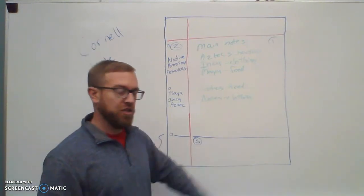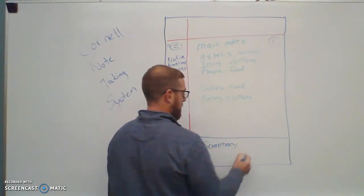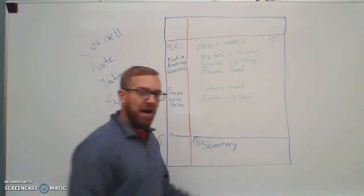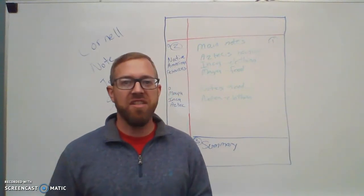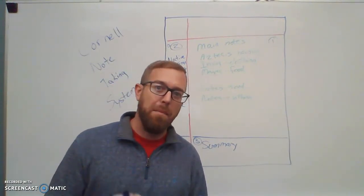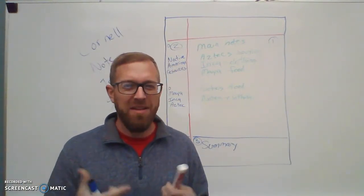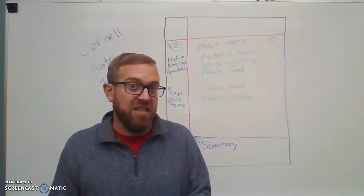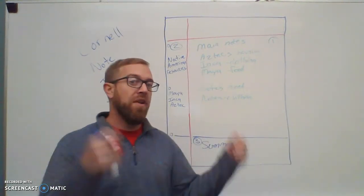Now at the very bottom, the third section, this is where you write a summary. You write a summary of what you're talking about. So at the very bottom in that third box, I might write down one sentence that says, "Mr. Garvey's lecture talked about the types of natural resources that the Maya, the Inca, and the Aztec use." Simple, right? You might want to add a little bit of detail in there, say that they use natural resources and not man-made resources or something along those lines.